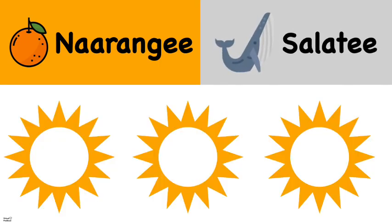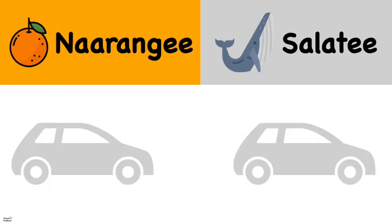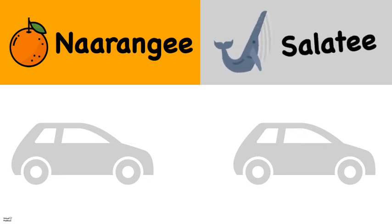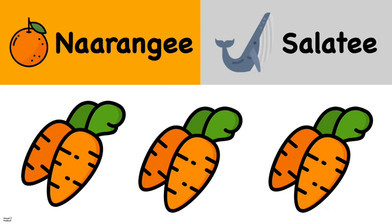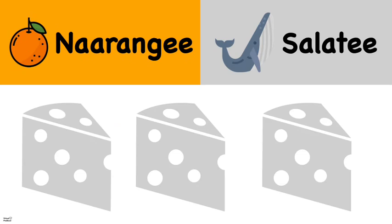Look at these bright suns. What's the color orange in Hindi? Narangi or saleti? Narangi. And look at these gray cars. What was gray in Hindi again? Narangi or saleti? Saleti. Yummy carrots. What's the color orange in Hindi? Narangi or saleti? Narangi. Here we have three gray cheese blocks. What's gray in Hindi? Narangi or saleti? Saleti.